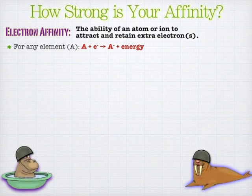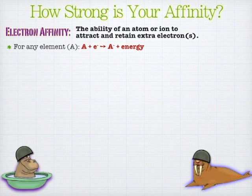The equation for this looks very similar to ionization energy, but in this case you have an atom that's gaining an electron, and then they become some kind of anion, and they're going to release energy. So the energy is on the product side this time, because you're releasing energy — that means it's exothermic.